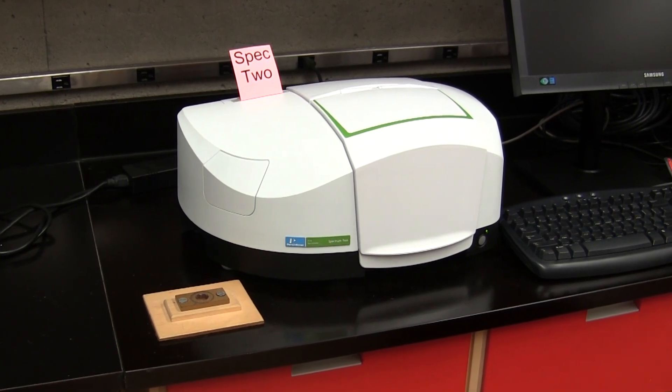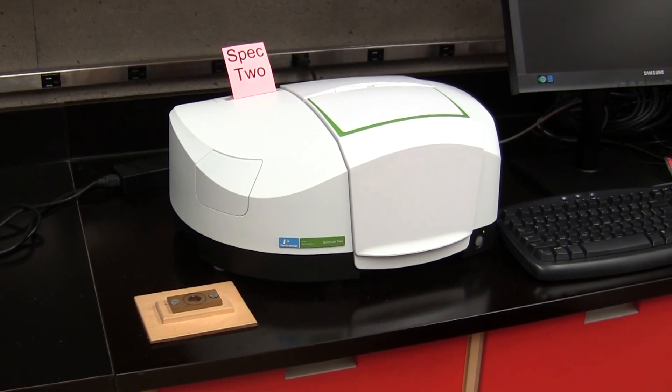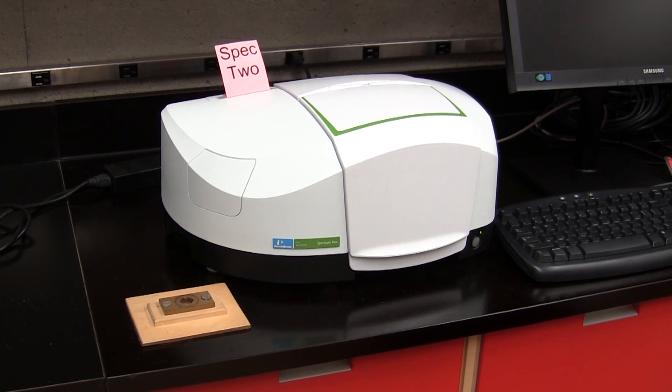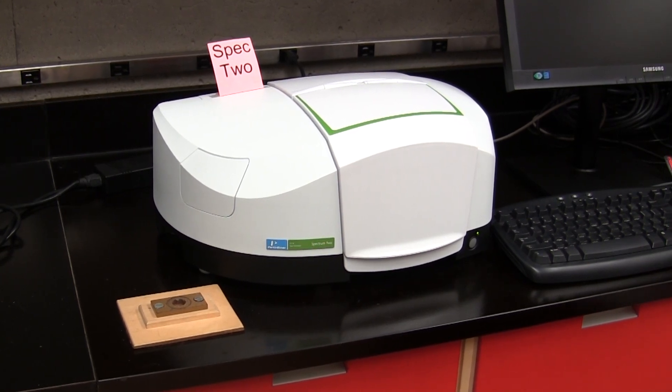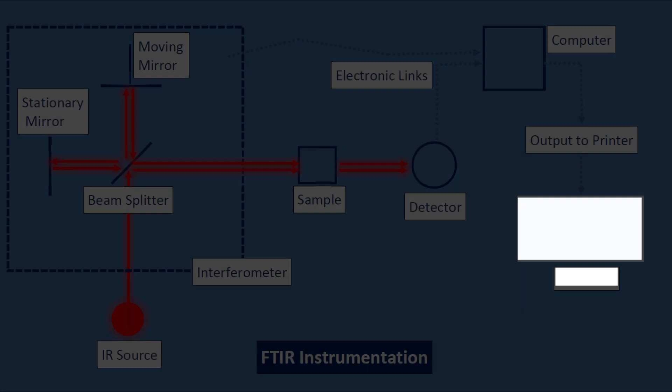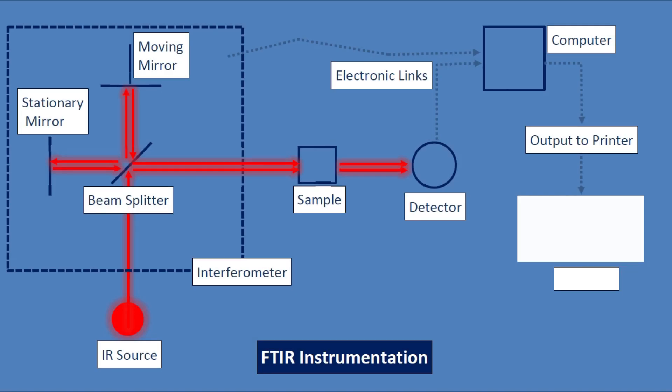Each instrument is capable of obtaining information about infrared radiation at all frequencies simultaneously as the radiation is passed through the sample. This diagram shows the basics of how we obtain infrared spectra using an FTIR spectrometer.